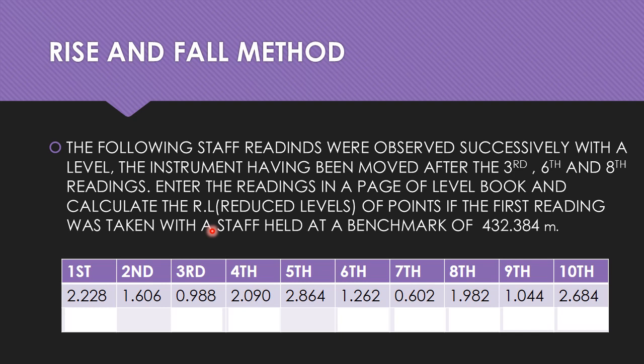The third, sixth, and eighth readings are foresights. Correspondingly, the fourth, seventh, and ninth readings will be backsights. So: the first reading is a backsight, third is foresight, fourth is backsight, sixth is foresight, seventh is backsight, eighth is foresight, ninth is backsight, tenth is foresight, and all other readings are intermediate sights.